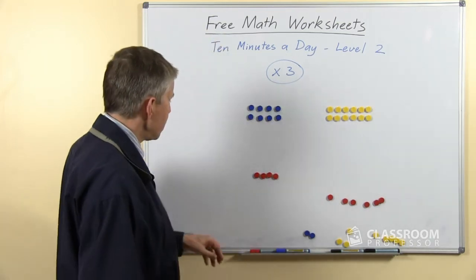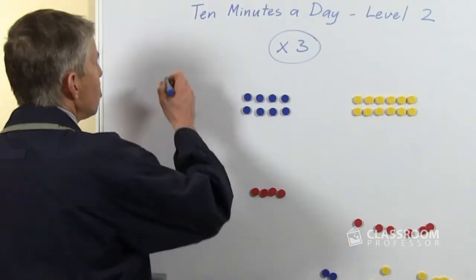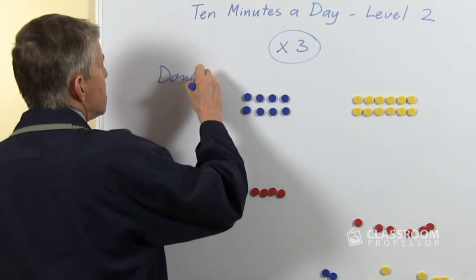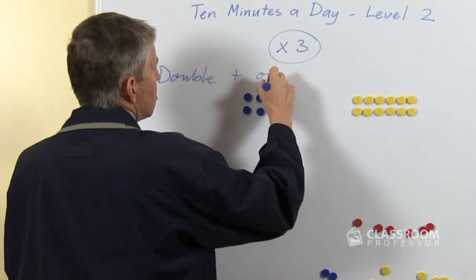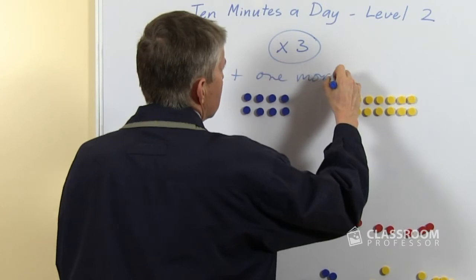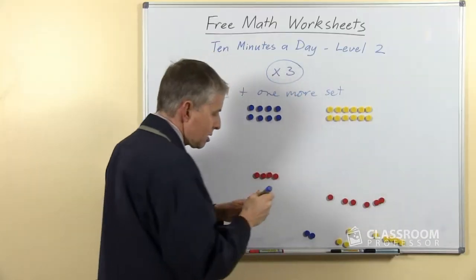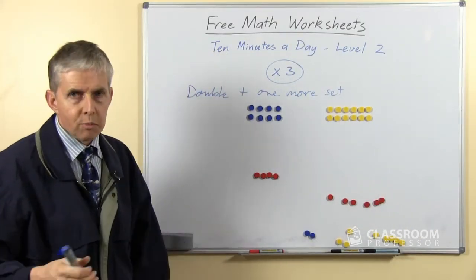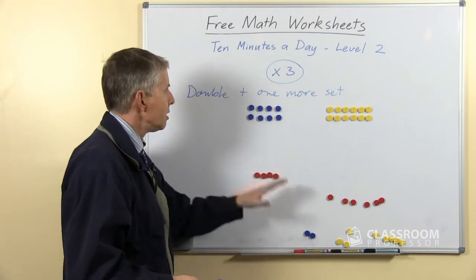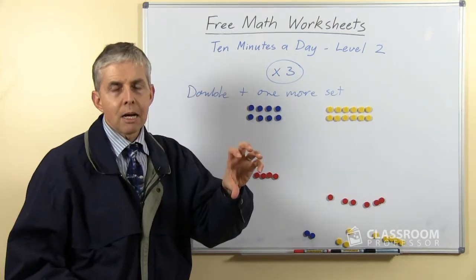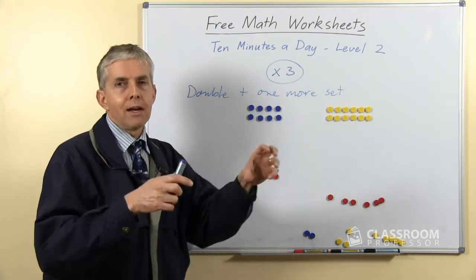So multiplying by 3 uses a strategy that we call double plus one more set. We don't want to get it confused with doubles plus one, which of course is an addition strategy, but the idea of having double a number and then add one more of that number.